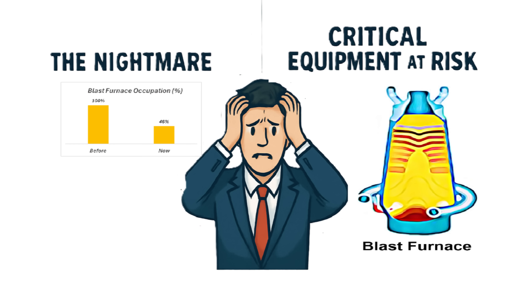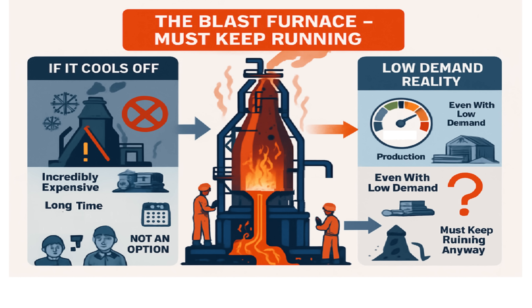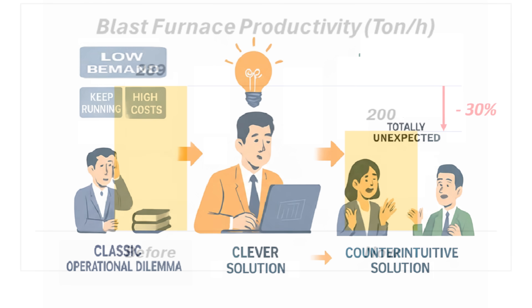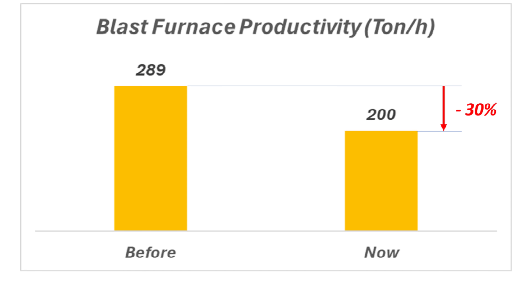And the big one is the blast furnace — you cannot just shut that down easily. If it cools off, restarting it is incredibly expensive and takes a long time. So letting it go cold isn't really an option, even with low demand. They need to keep it running somehow, even if they don't need all the iron it produces. Management, guided by the optimization model's insights, proposes something totally counterintuitive: deliberately reducing the blast furnace's productivity by 30%.